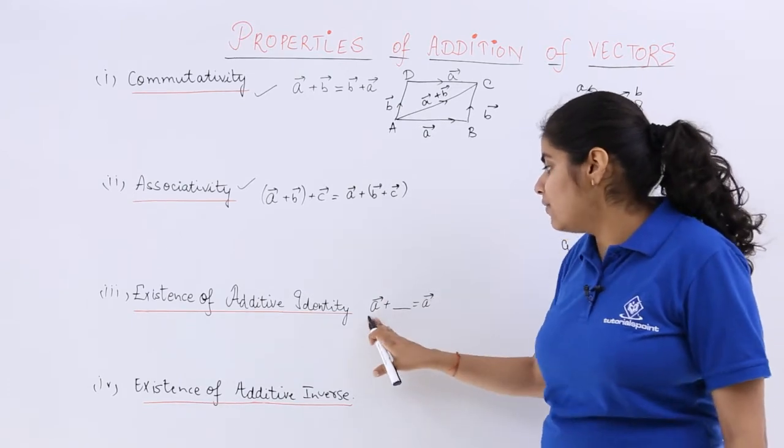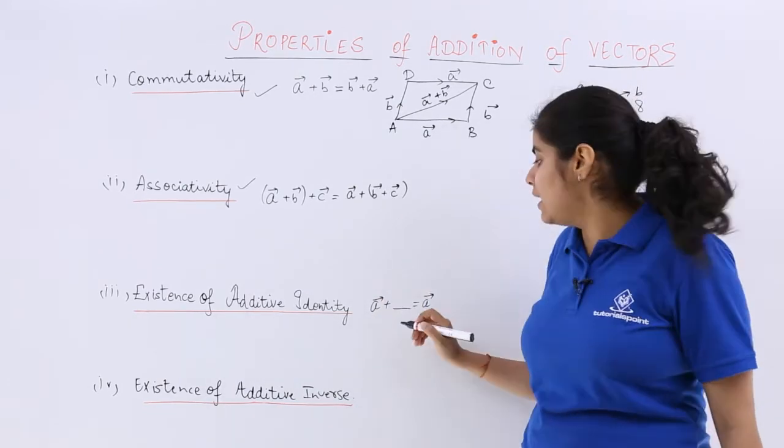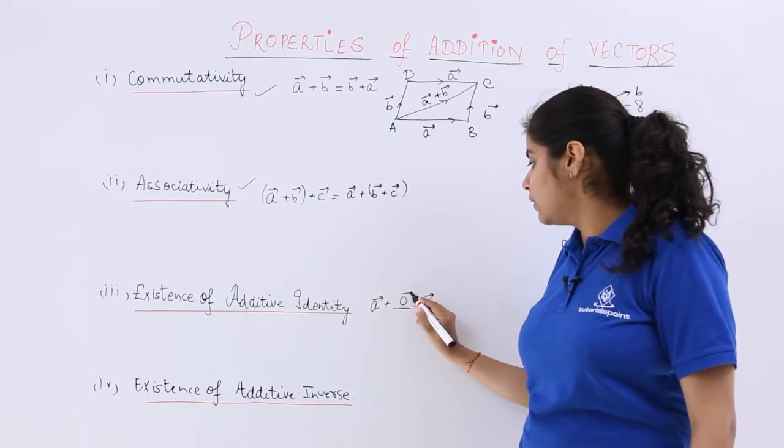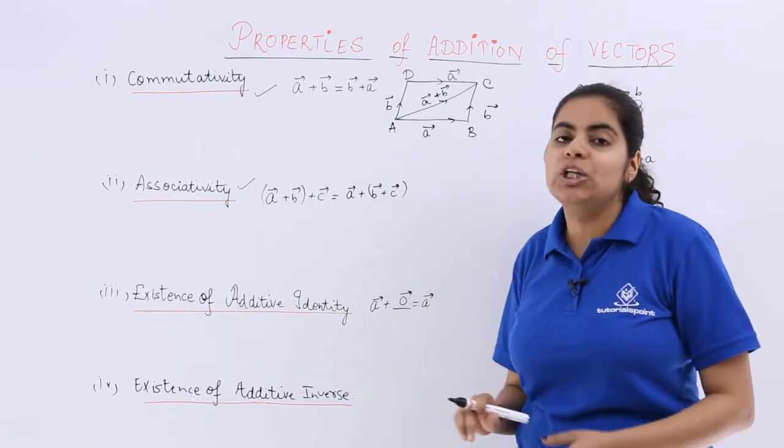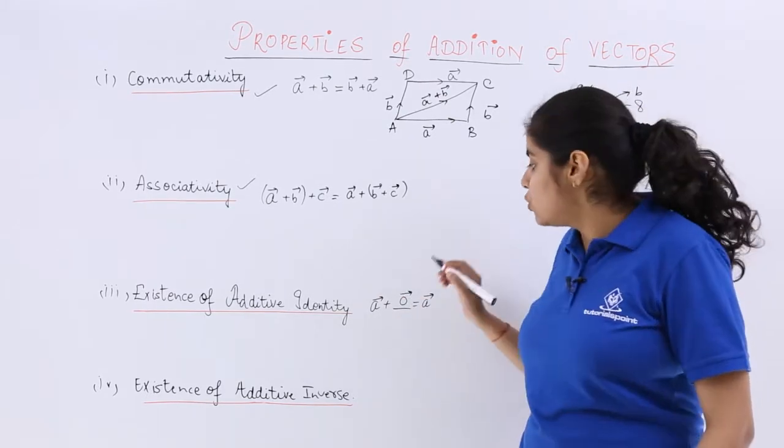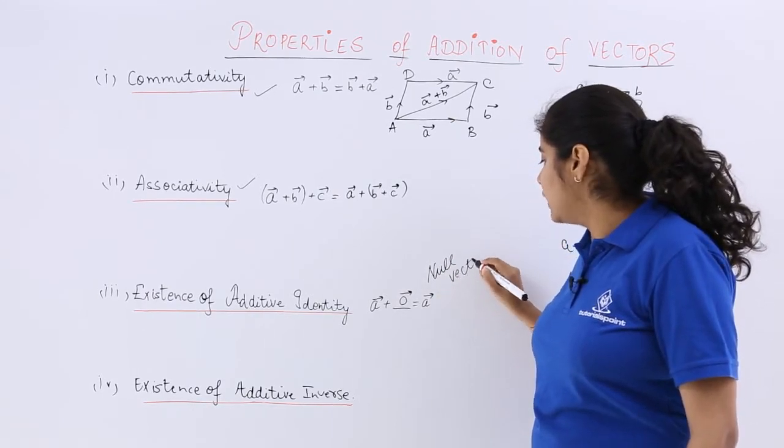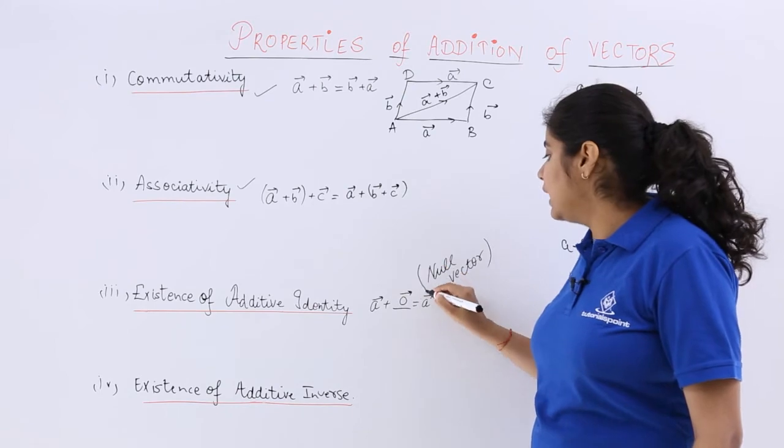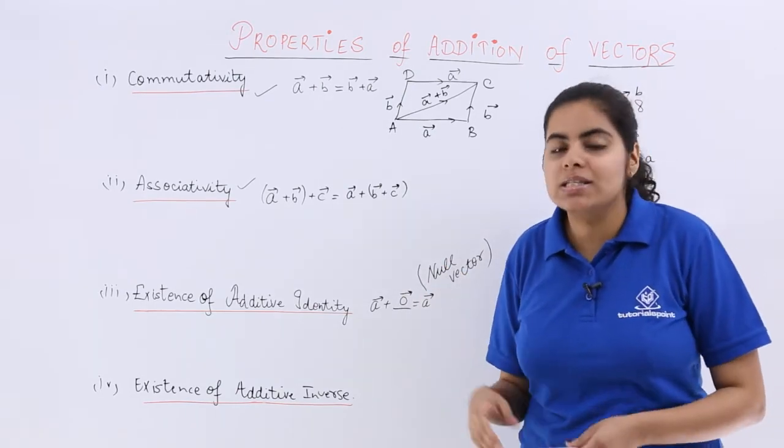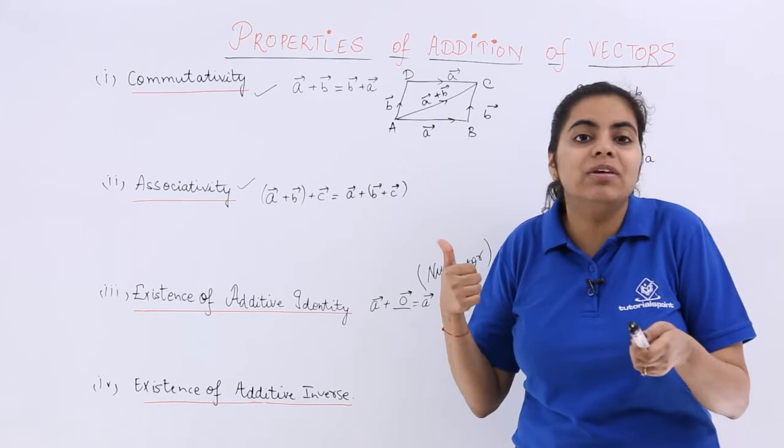So A vector should give me back A only when 0 is added and 0 is nothing but your null vector. So null vector or 0 vector is additive identity for this given vector because 0 vector will not give any addition to the magnitude.